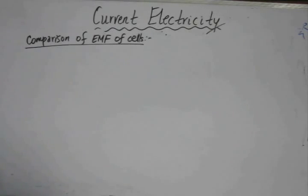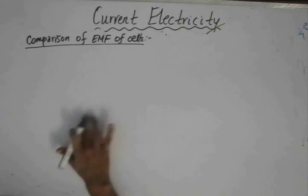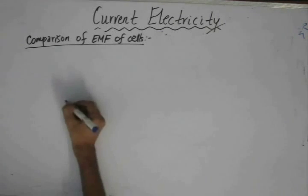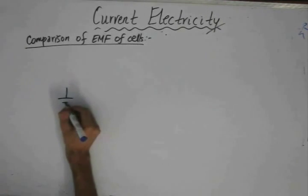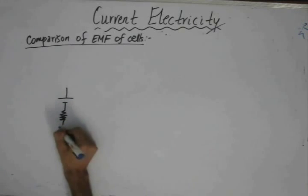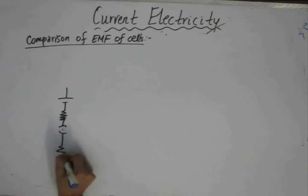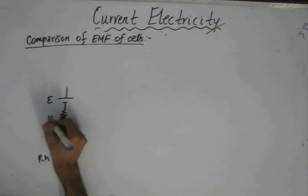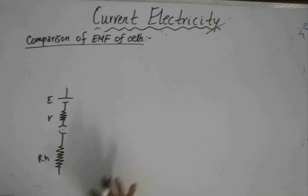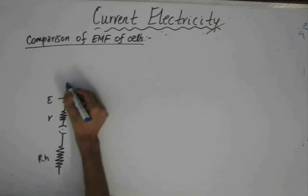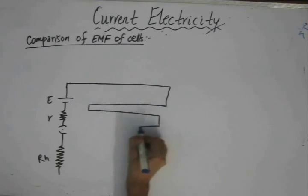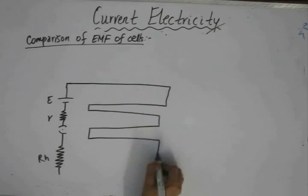The circuit for comparing the EMF of cells: for every application of the potentiometer wire, the primary circuit remains the same. In the primary circuit, we have an EMF, some internal resistance, and a variable resistor or rheostat. Across the primary circuit, we have a potentiometer wire of some corresponding length.